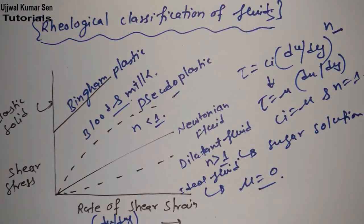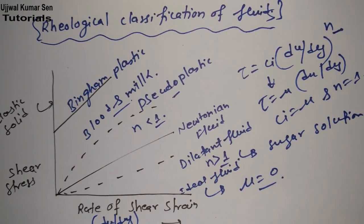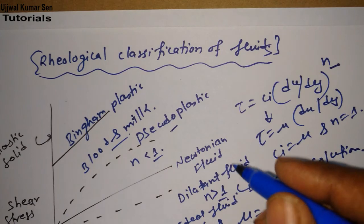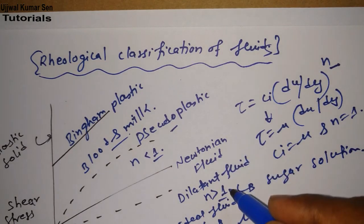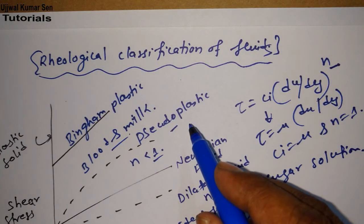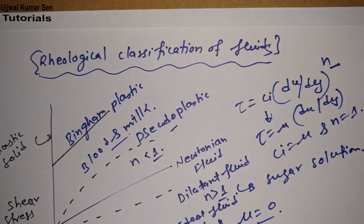Now ideal fluid. If μ = 0, then we'll say this is an ideal fluid. Example? Don't have. If you'll find out, tell me, okay? I will share in my video tutorial.